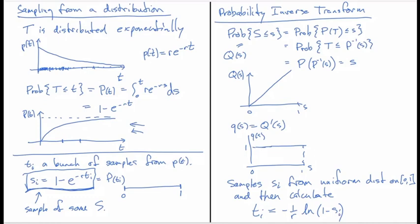And so this is how we calculate t_i's that are exponentially distributed. But this works for any distribution. If you have the formula for capital P of t and you can invert it, then you can sample that distribution if you're able to do it. So let me switch over to MATLAB.